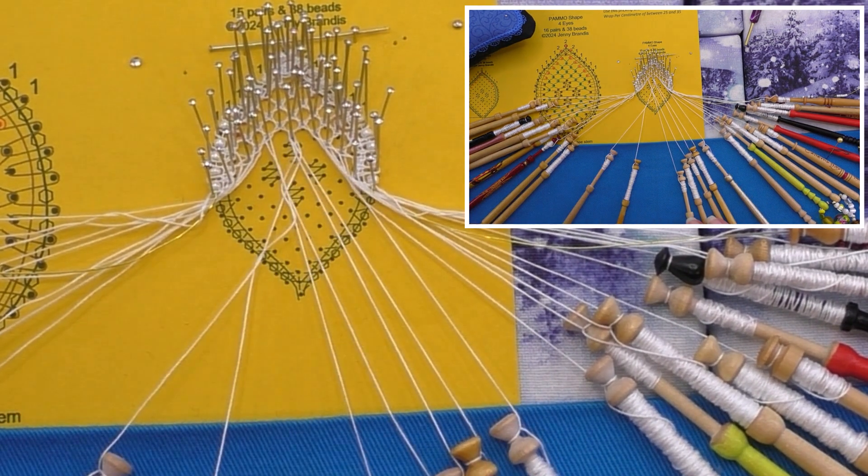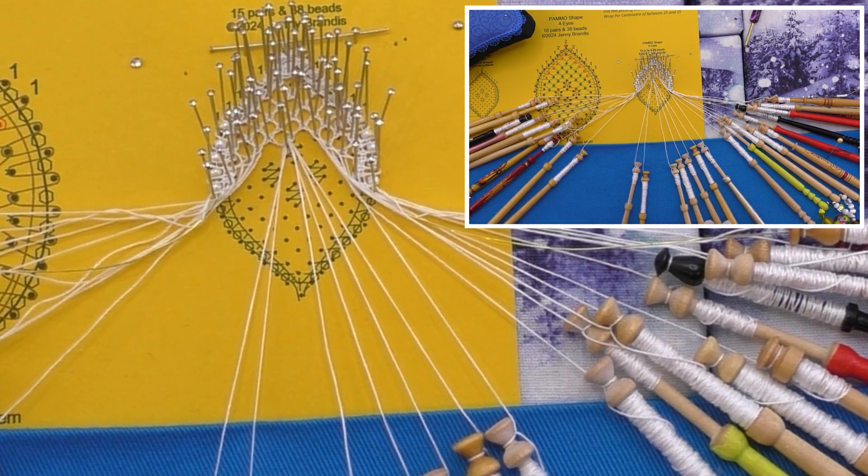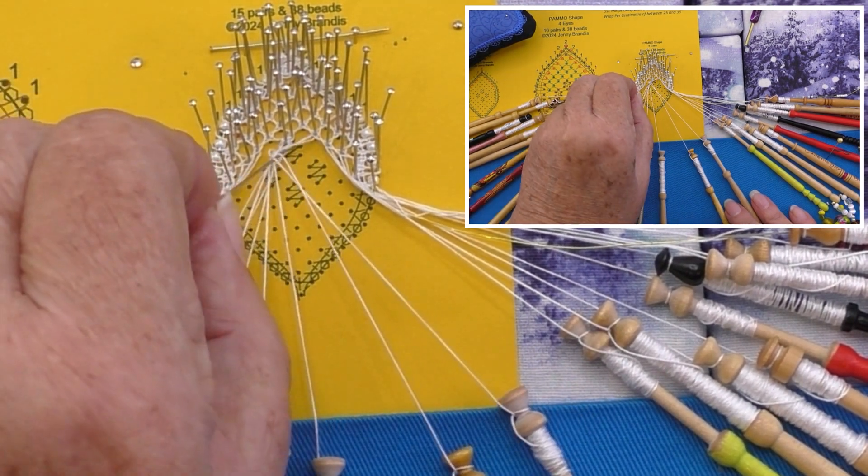Cloth stitch through the incoming pair, put up the pin and tension. Cloth stitch to the right and through the incoming pair, put up the pin and tension.